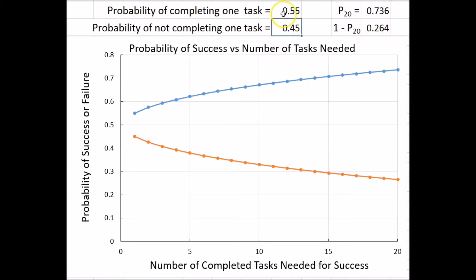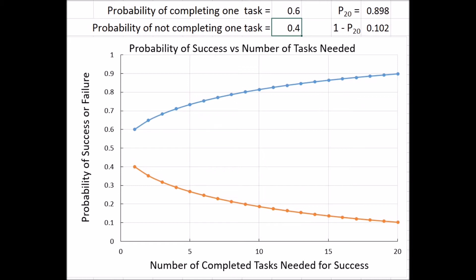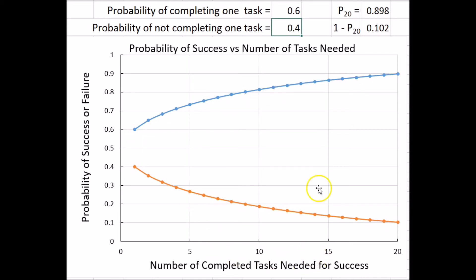We've only increased our probability of success from 0.5 to 0.55. Let's go to 0.6 and see what happens. Now with 20 tasks, we're almost up to 90% probability of success. The probability of success — defined as completing a certain number of tasks before failing to complete that number — increases with the number of tasks you choose as your model for success.